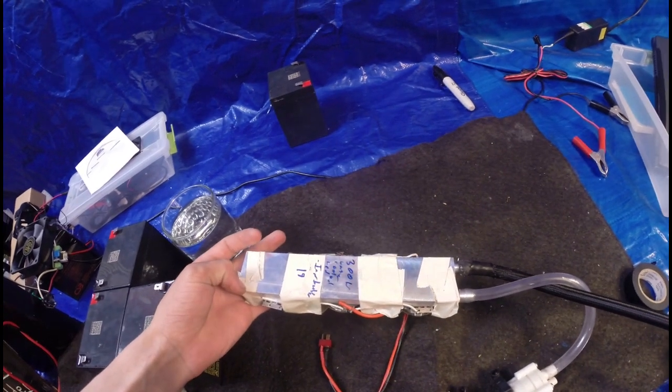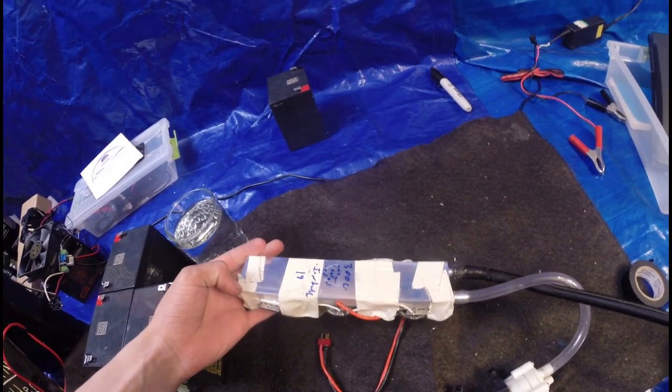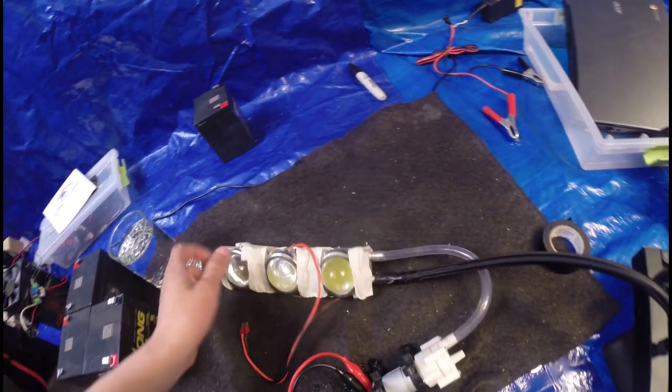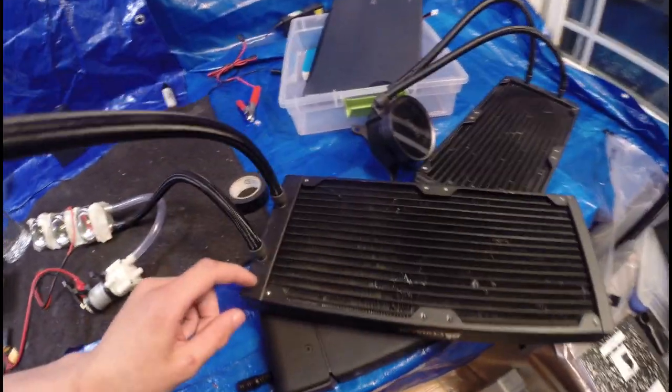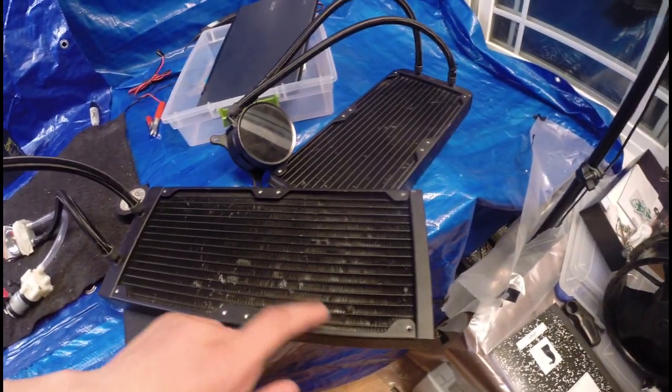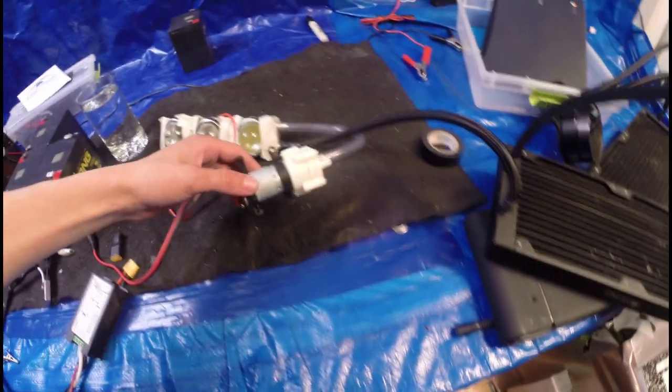On the back is a 240 millimeter by 40 millimeter water block, connected to two tubes connected to a 120 by 240 millimeter radiator and a 12 volt pump.